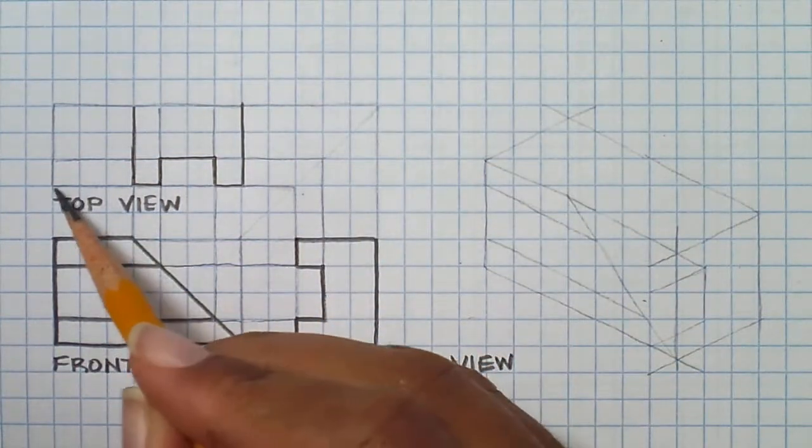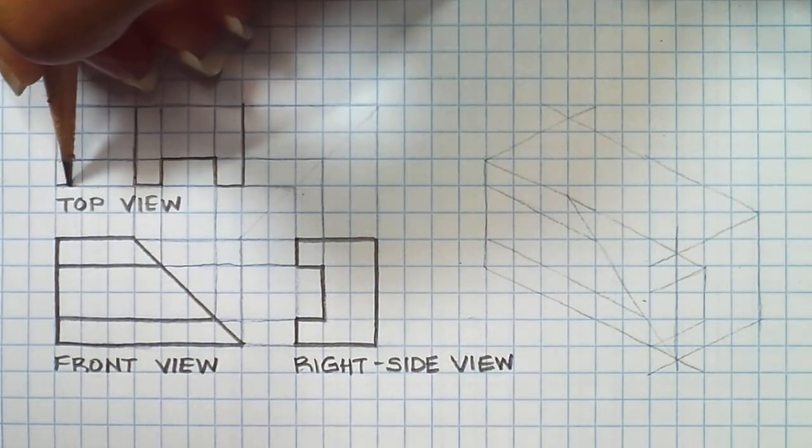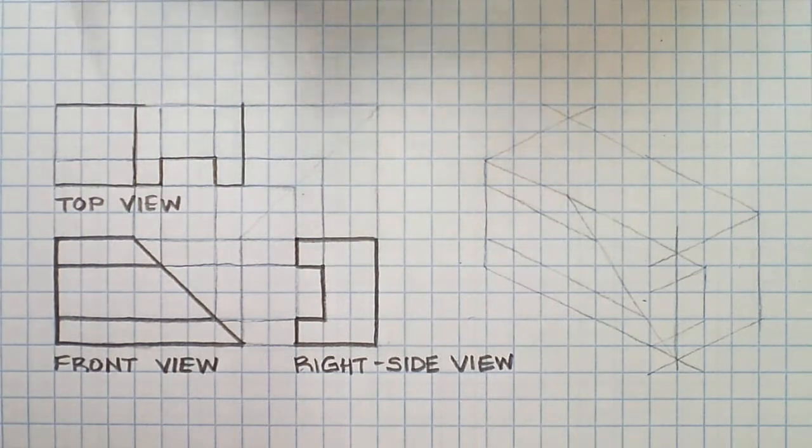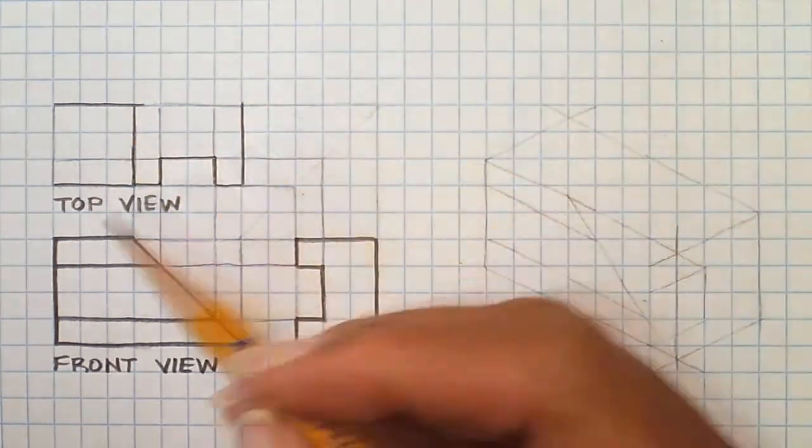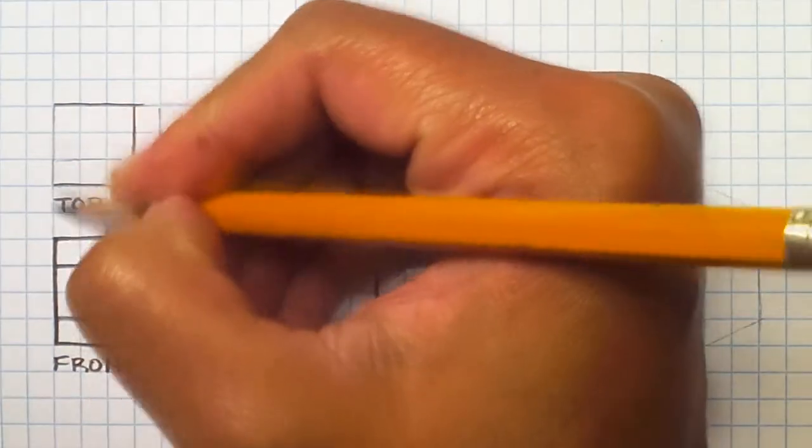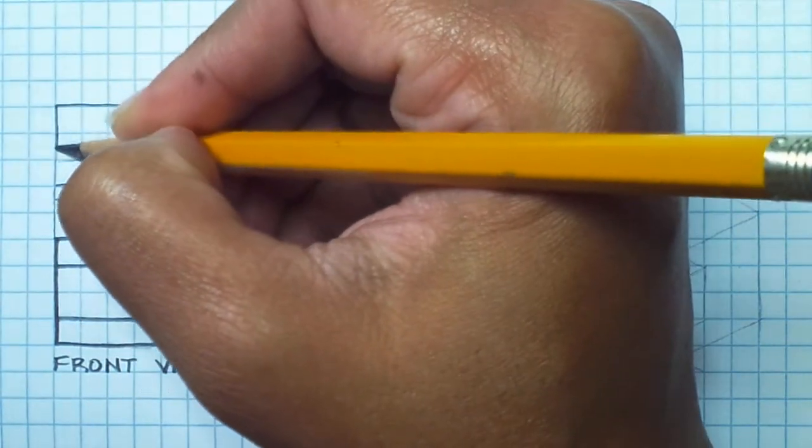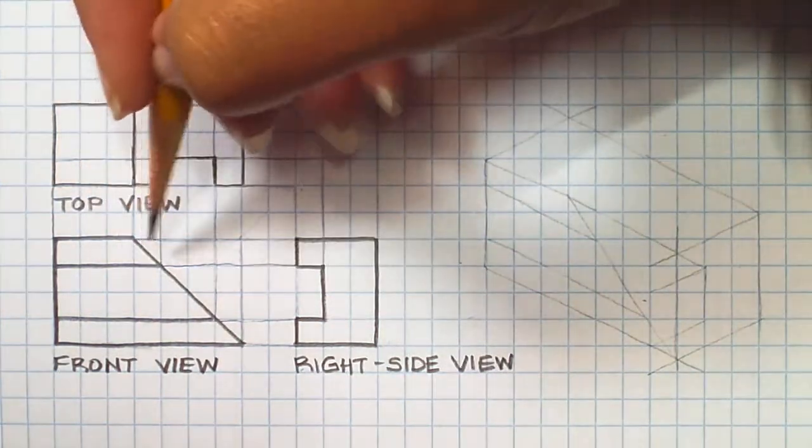This particular portion is going to be three units, so on both sides. And the top of this part is going to be three units in depth. So we have this particular part here. That gives us the width. This gives us the depth. Now we can close this off.